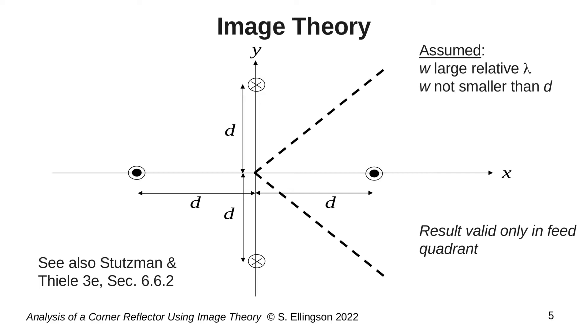If those two conditions are true, then this image theory model will be able to do a decent job modeling what is going on within the 90 degree region containing the feed. Otherwise, you'd expect that diffraction from the edges of the plates might significantly affect the results inside this 90 degree region. And in that case, you'd need to account for that diffraction separately. More on that at the end of this video.